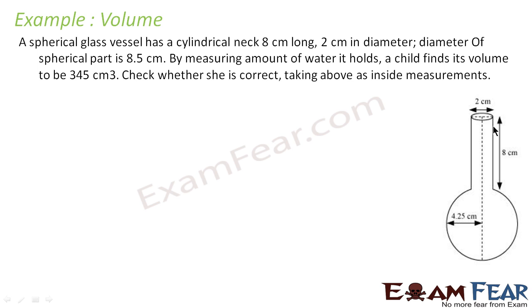Let's take another example. A spherical glass vessel has a cylindrical neck 8 cm long and 2 cm in diameter. The diameter of the spherical part is 8.5 cm, so its radius is 4.25 cm. By measuring the amount of water it holds, a child finds its volume to be 345 cm³. Check whether the child is correct.